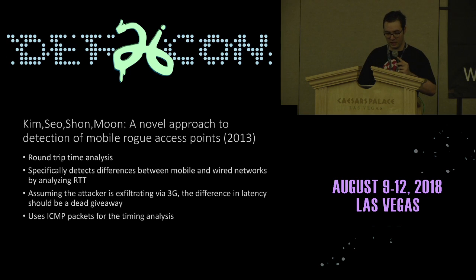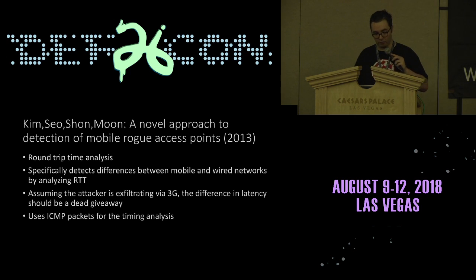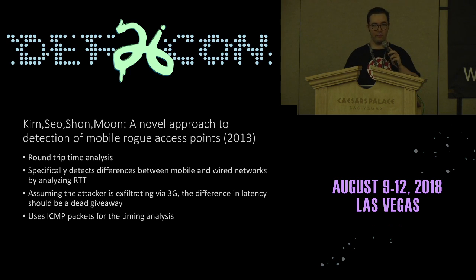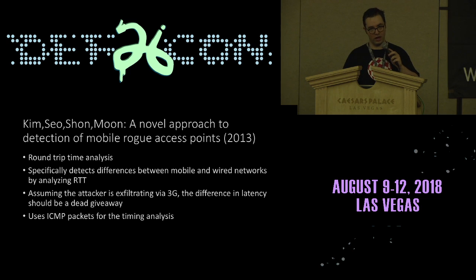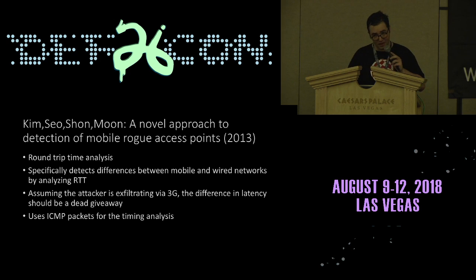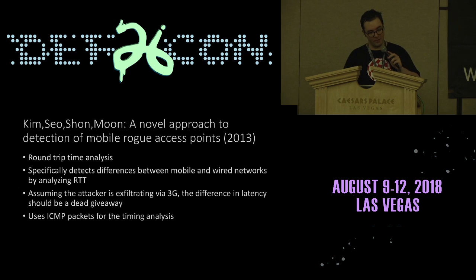Here's another paper from 2013 — Kim, Seo, Sean, and Moon: "A Novel Approach to Detection of Mobile Rogue Access Points," measuring latencies for round-trip time analysis. A rogue AP will likely have much greater latency, and they make the inference that a rogue AP will likely be connected to some kind of 3G wireless. If you've been on a red team, you'd have something on one side connected to the victim network and 3G on the other for exfil. Obviously 3G will have a great deal of latency. But you have to associate to the AP, which isn't in the spirit of Gabe's tool.